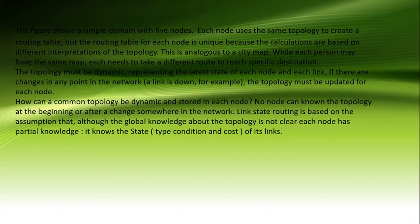The topology must be dynamic, representing the latest state of each node and each link. If there are changes at any point in the network, the topology must be updated for each node. The question is: how can a common topology be dynamic and stored in each node?